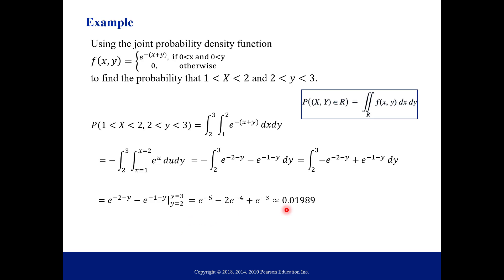So you can say that there is about a 1.99% or about 2% probability that X is between 1 and 2, and Y is between 2 and 3. Okay, so that's just some examples of what you can do with double and triple integrals.